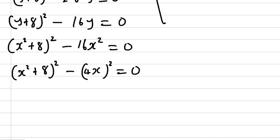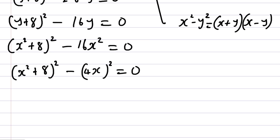Now 16X squared can be written as (4X) squared. So we have (X squared + 8) all squared minus (4X) all squared equals zero. If you look at these two terms, it's the same as the difference of two squares: A squared minus B squared equals (A + B)(A − B). So we apply that here.